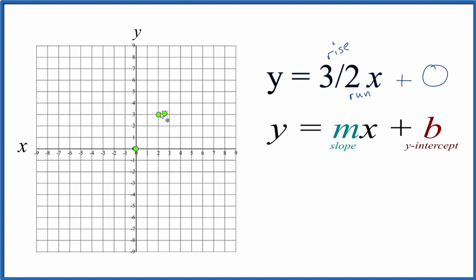From there, we go 1, 2, 3, we rise 3, we run 1, 2, and there's our line.